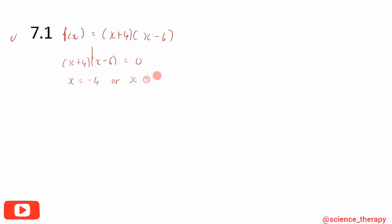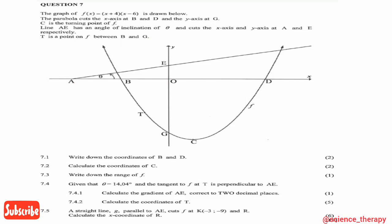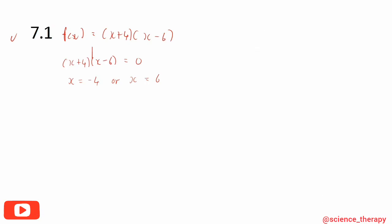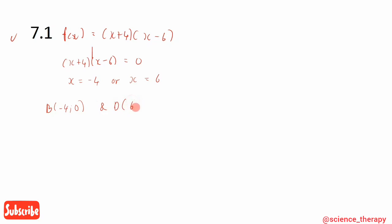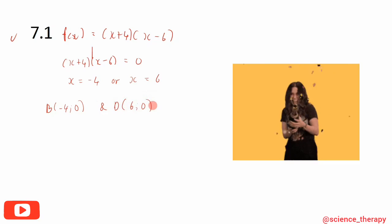Solving gives x = -4 or x = 6. Looking at the graph, B is on the negative x-axis and D is on the positive x-axis. So B is (-4, 0) and D is (6, 0).